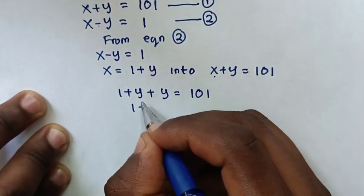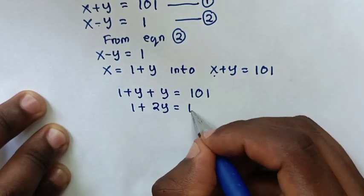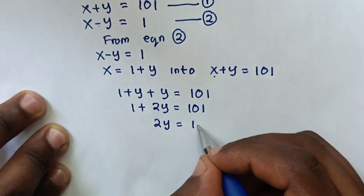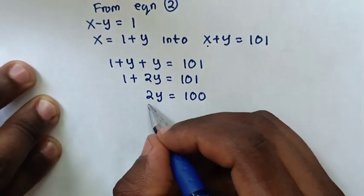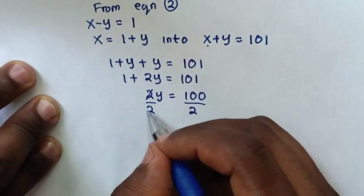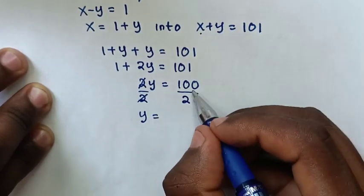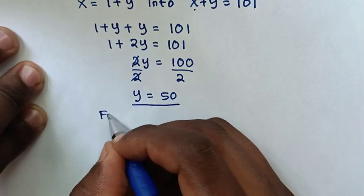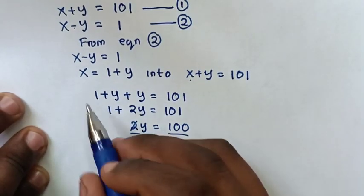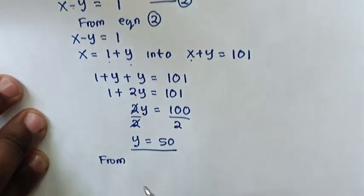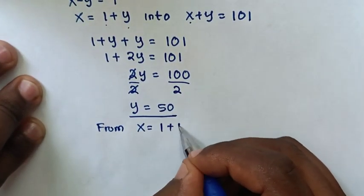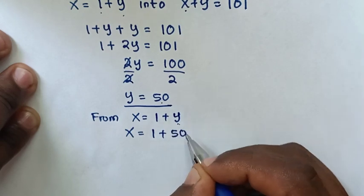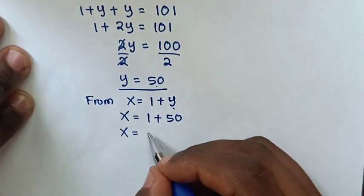This simplifies to 1 plus 2y equals 101. Taking 1 to the right side: 2y equals 100. Dividing both sides by 2 gives y equals 50. Substituting back, x equals 1 plus y equals 1 plus 50, so x equals 51.